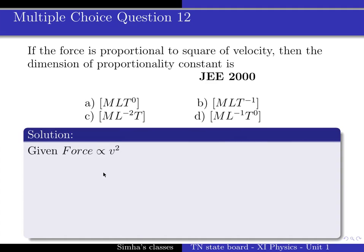What do we do? Force is proportional to velocity square, that is v square. If you have proportional to constant, then force will be equal to a constant multiplied by v square.